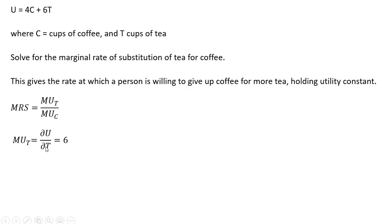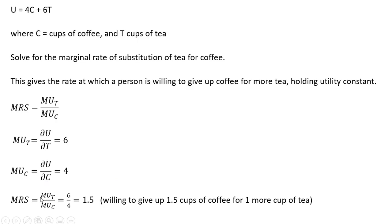The marginal utility of tea — we get the partial derivative of the utility function with respect to tea — we get back 6. And the marginal utility of coffee in this example is 4. Forming the marginal rate of substitution, the ratio of these two marginal utilities, 6 divided by 4 is 1.5. So in this example, the consumer is willing to give up 1.5 cups of coffee for one more cup of tea.